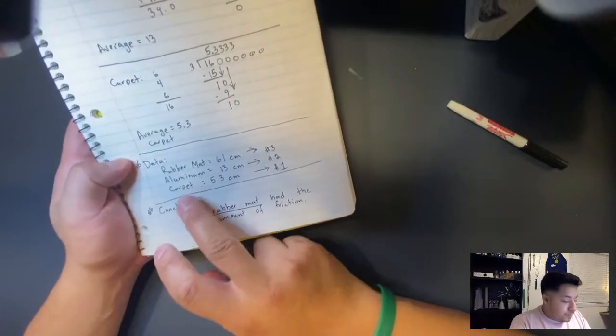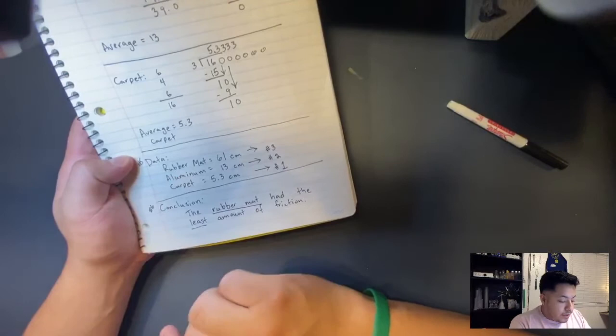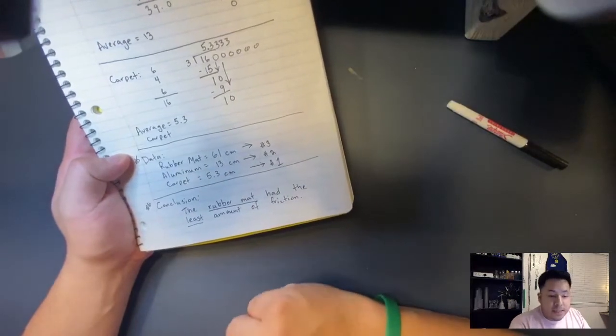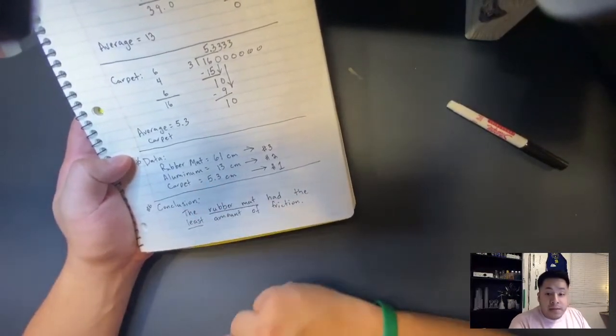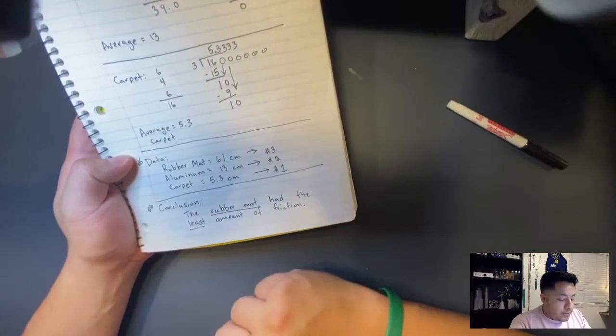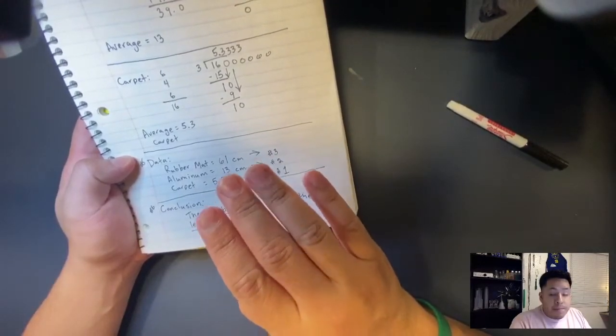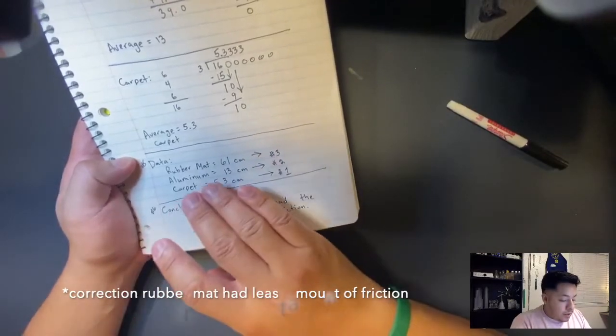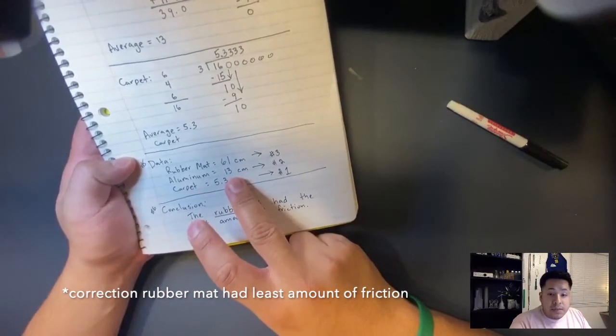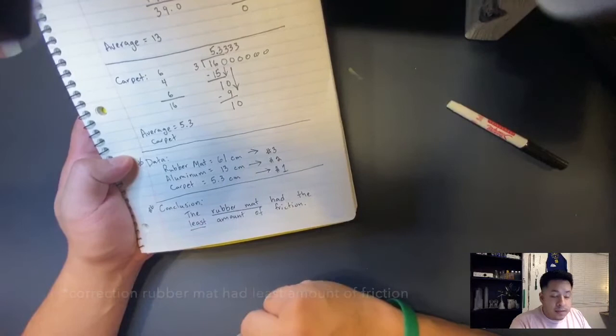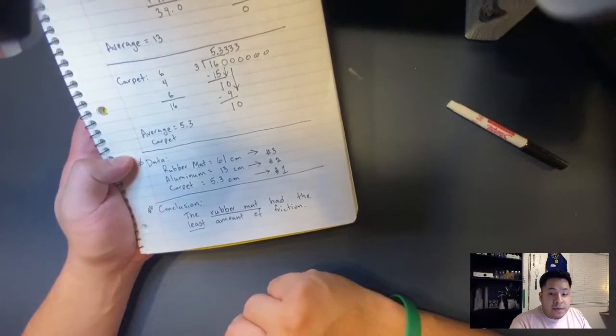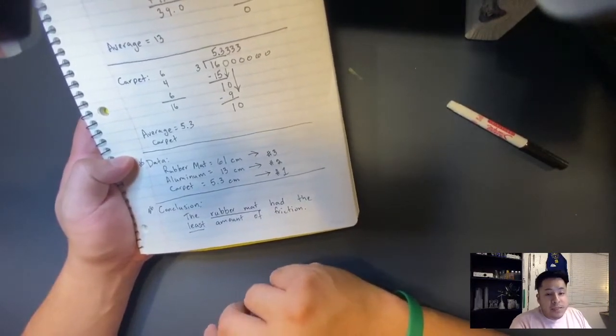The data. Here's the data. Here are the numbers. So the rubber mat has 61 centimeters, greater than or equal to 61 centimeters. So that came in third. That one had the most friction. The aluminum, 13 centimeters. That one came in second. Second place in having, not the most, but second most.